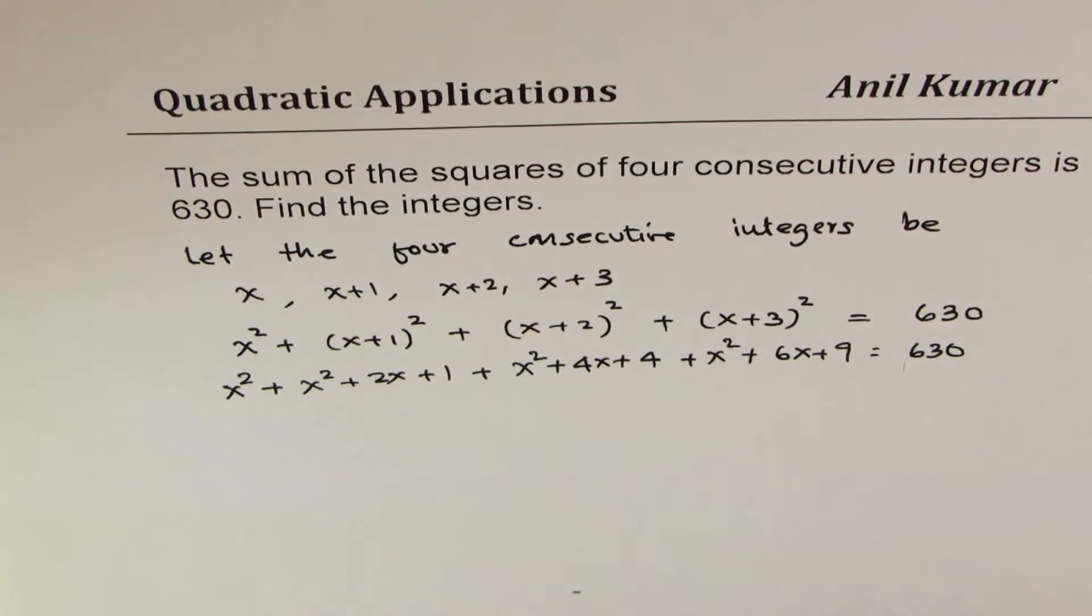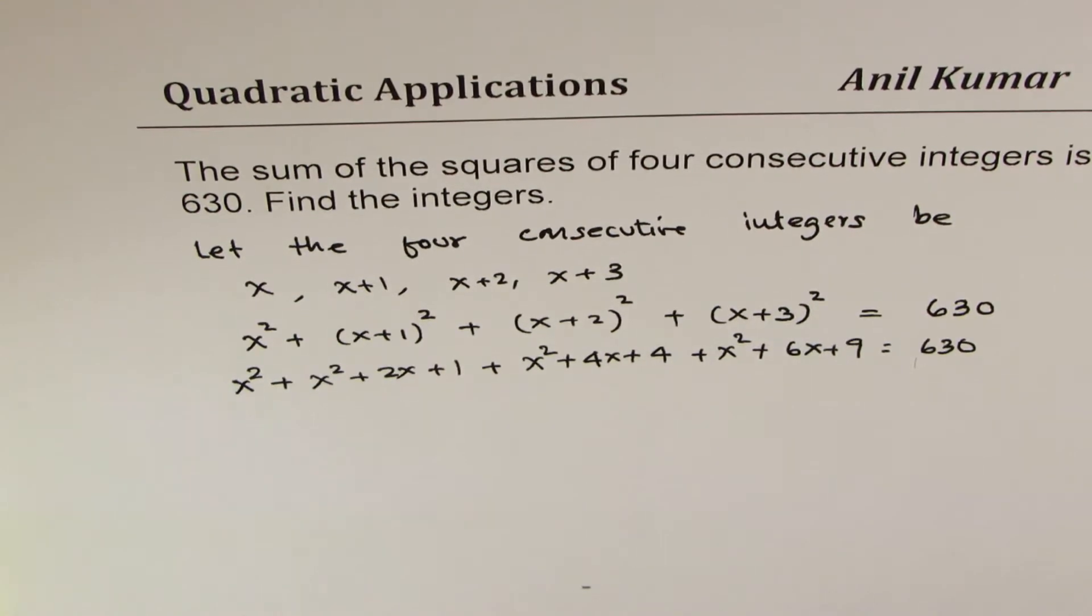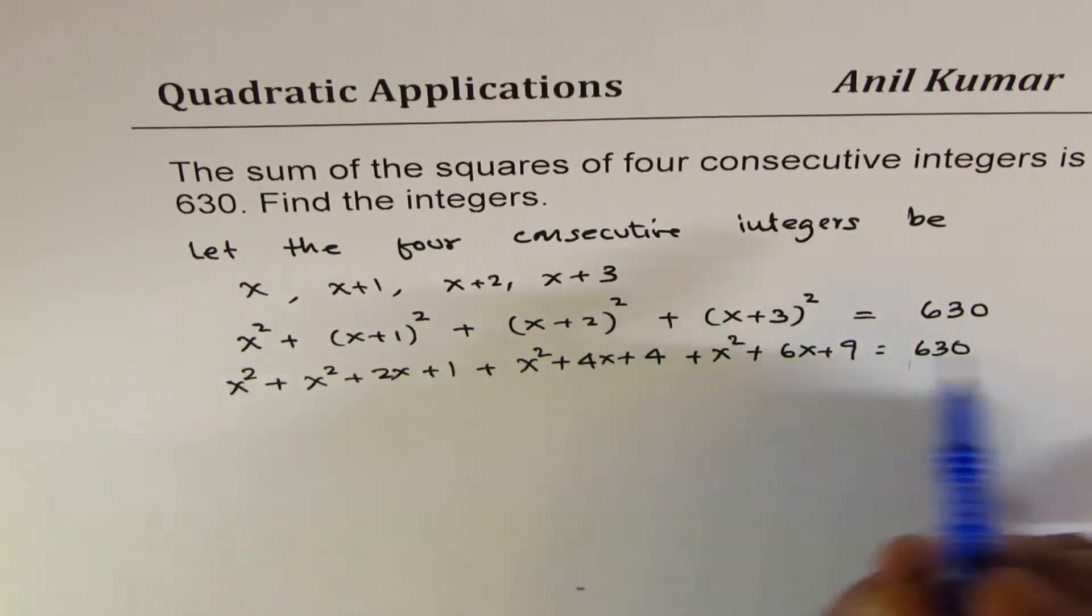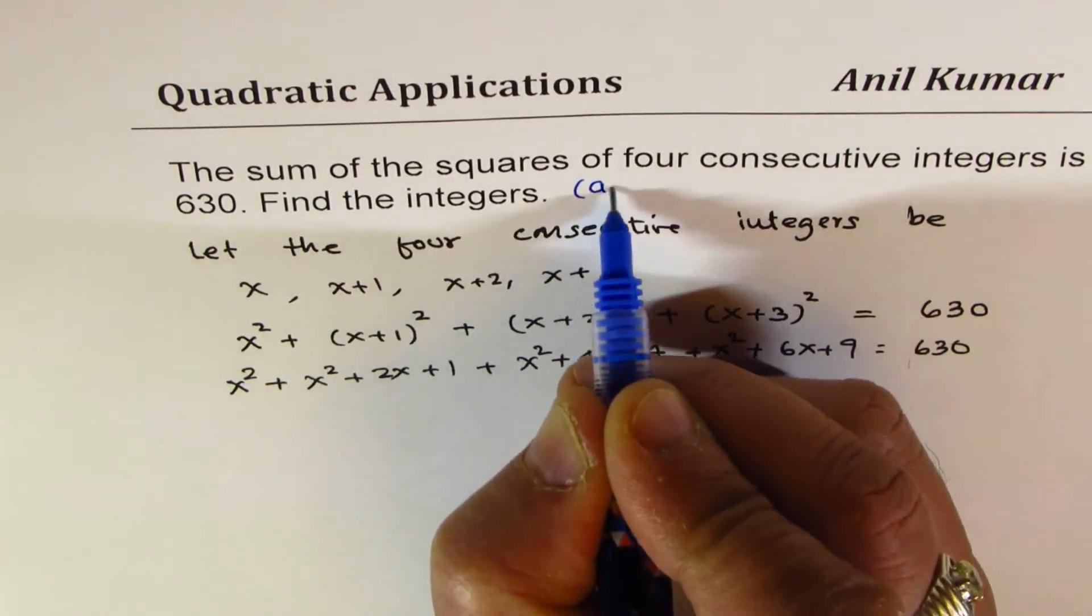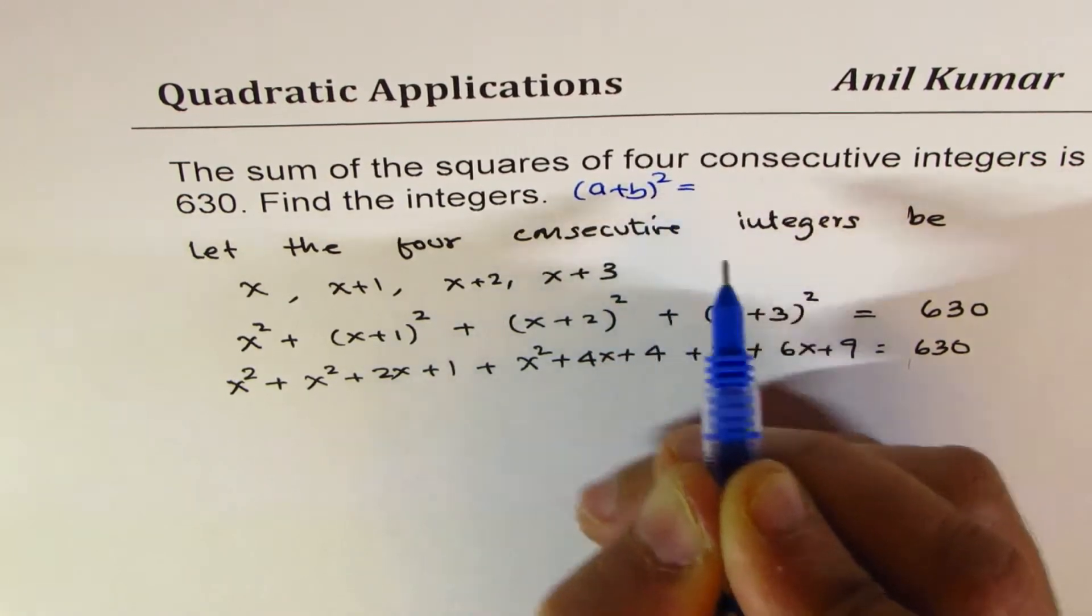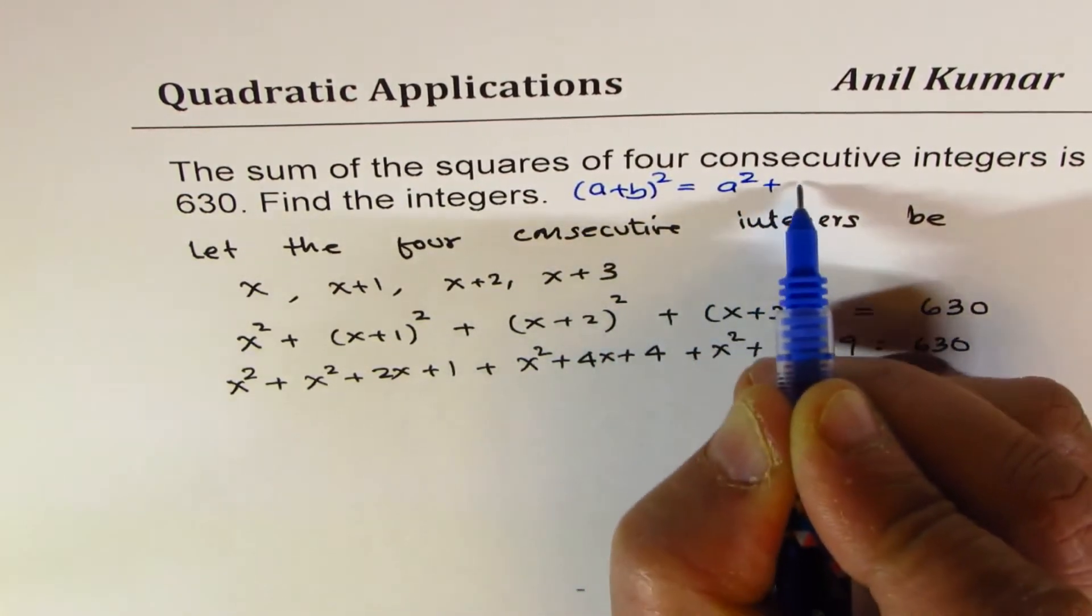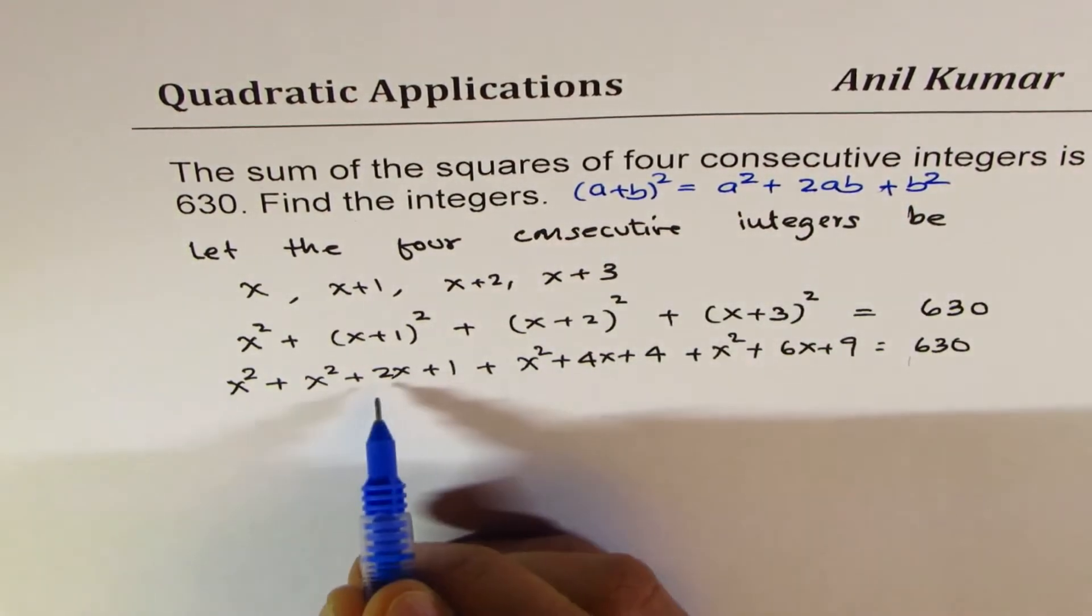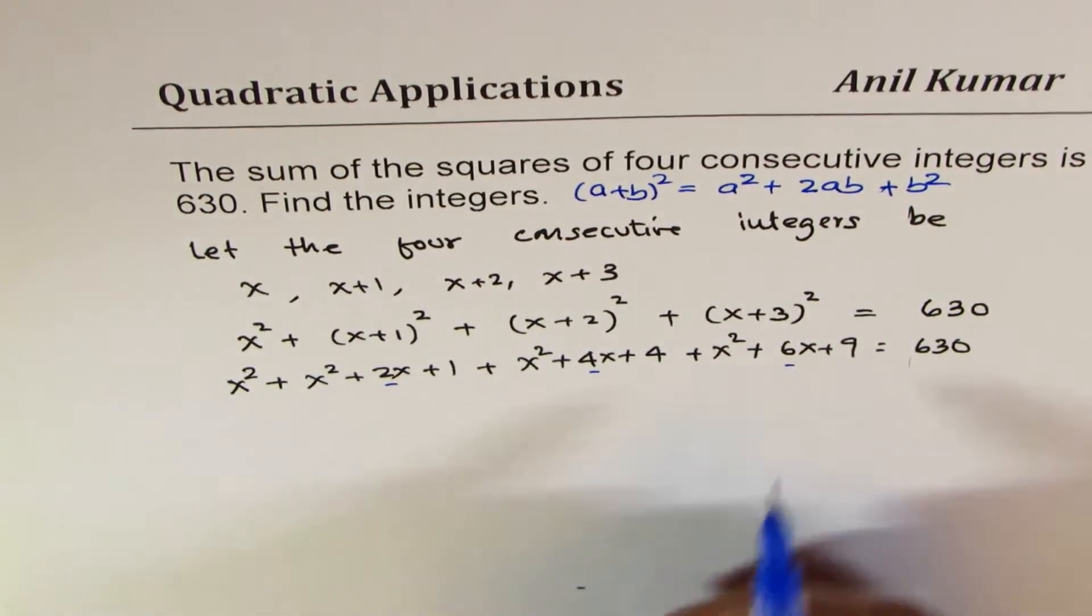So I hope you understand the formula which I have applied here. The formula is a plus b whole square. So let me write the formula here. a plus b whole square is a square plus 2ab plus b square. So the center terms here are the 2ab terms.